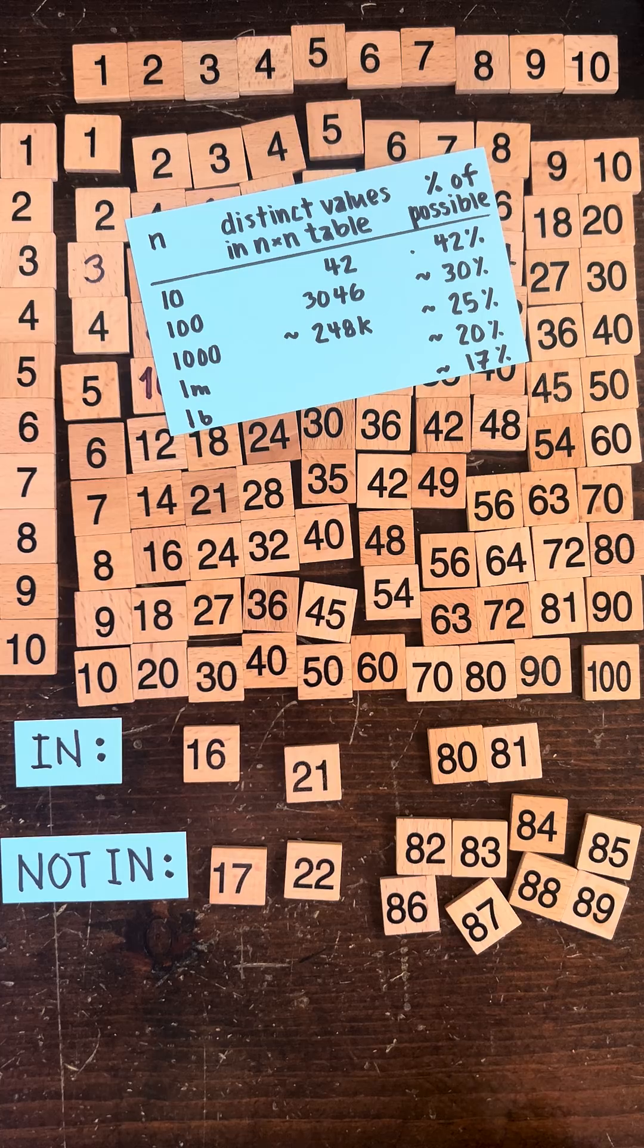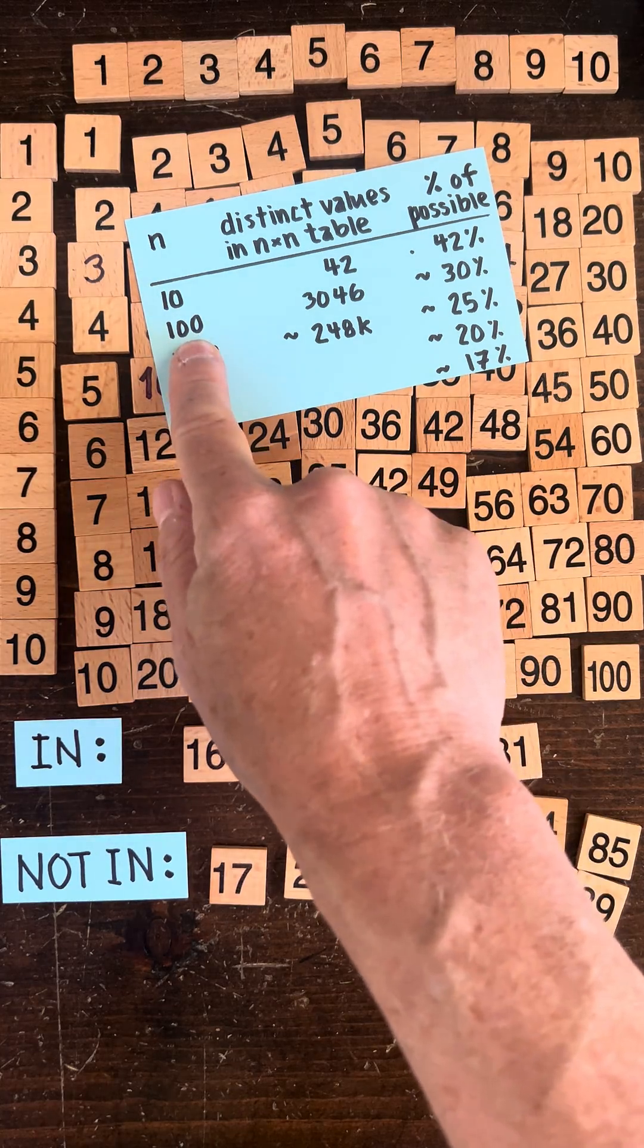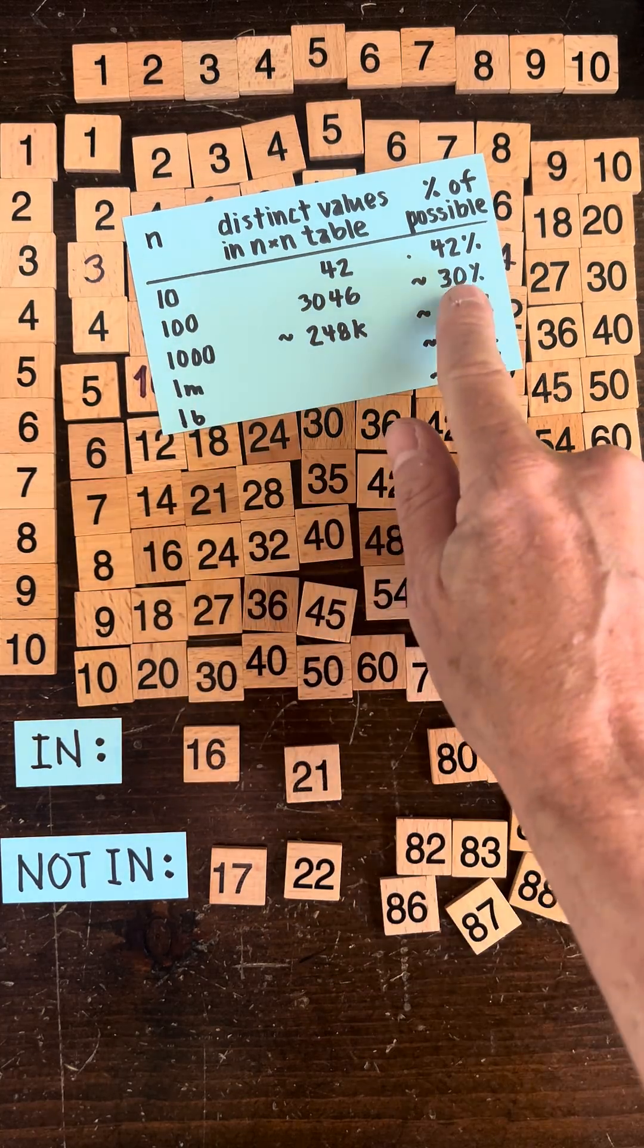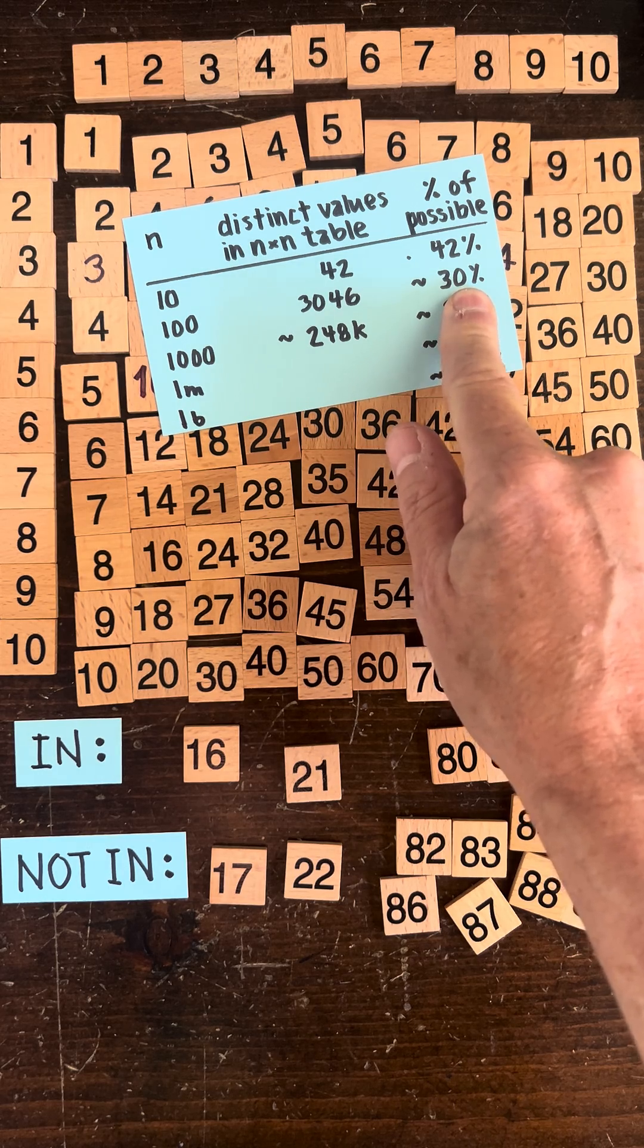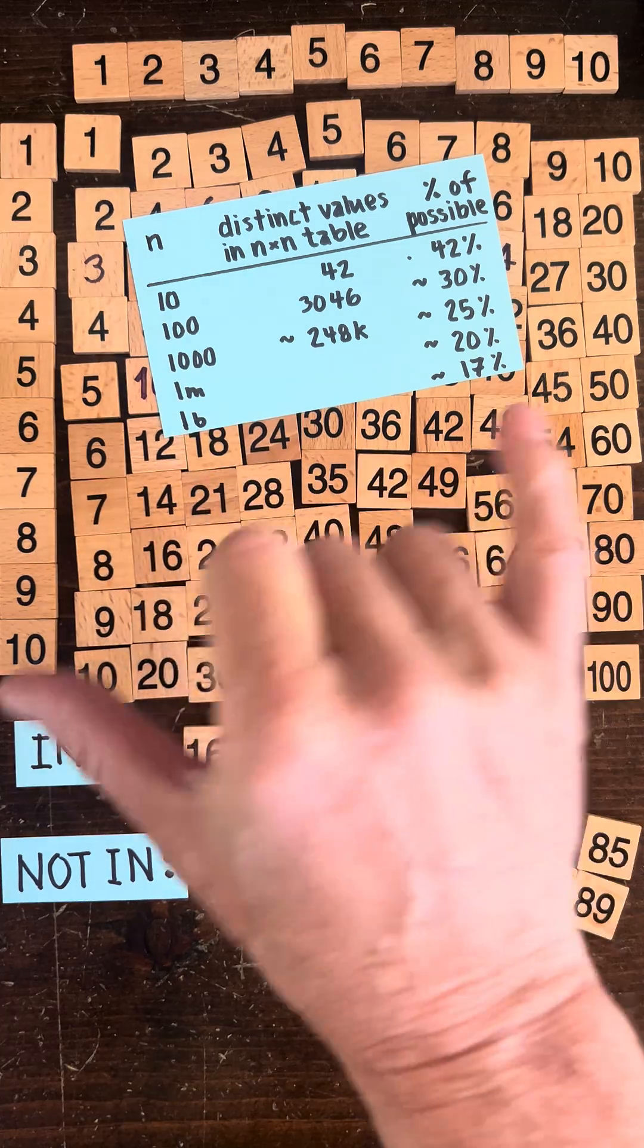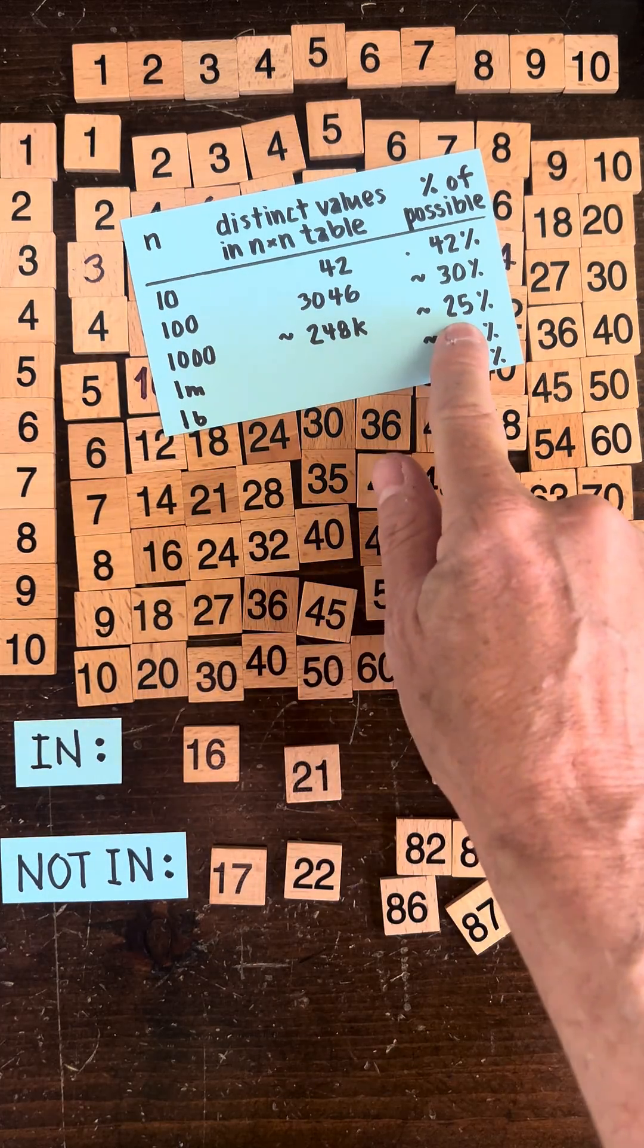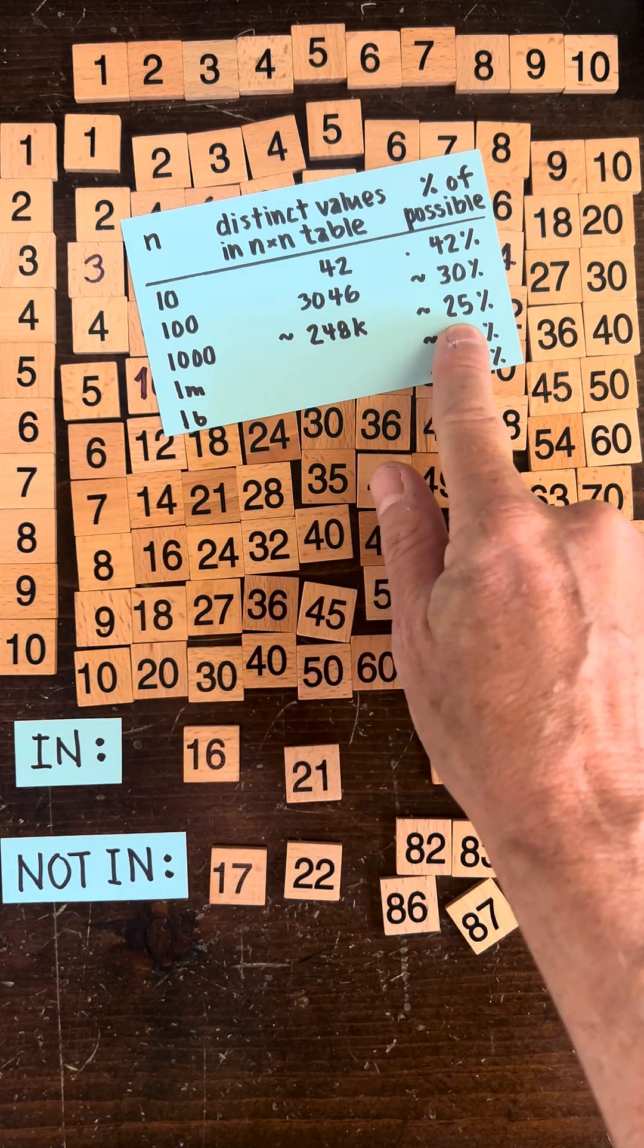Now a mathematician is going to ask, okay what about the 100 by 100 table? It turns out that 30 percent of the possible values show up in that table. What about the 1000 by 1000 table? Of all the numbers between 1 and a million, only 25 percent of them show up in the multiplication table.